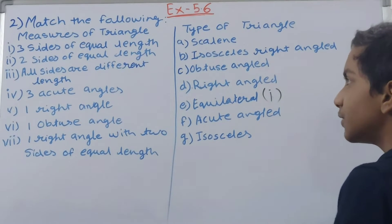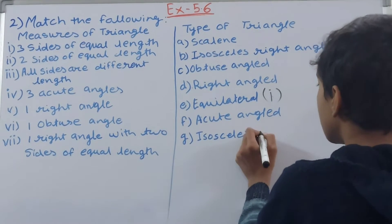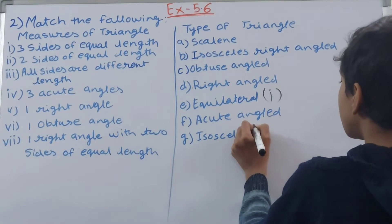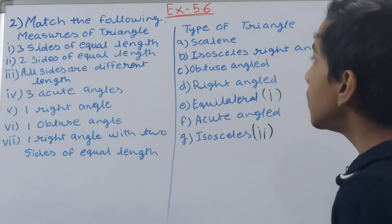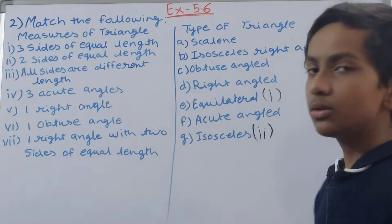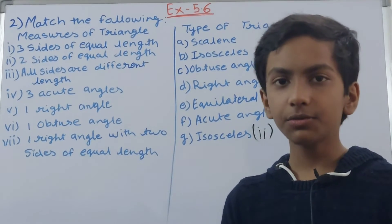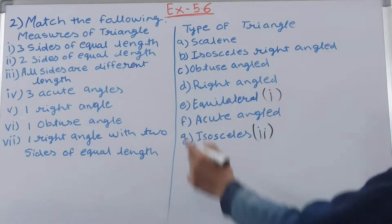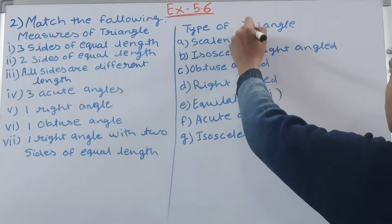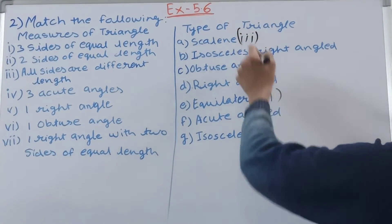Then, all sides are of different length. So all sides are of different length out of three, that is a scalene triangle. So here it goes.